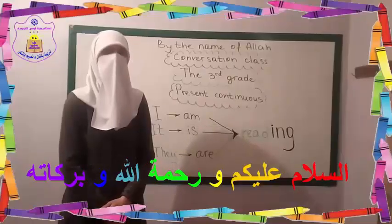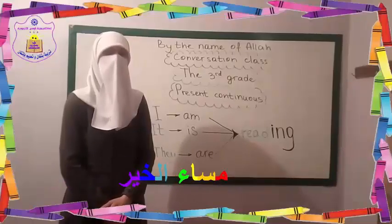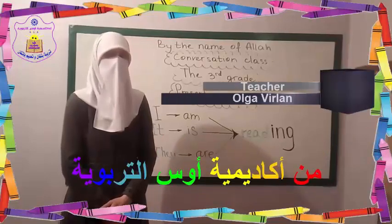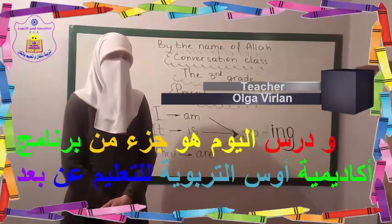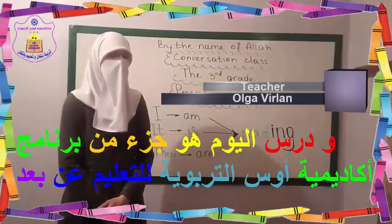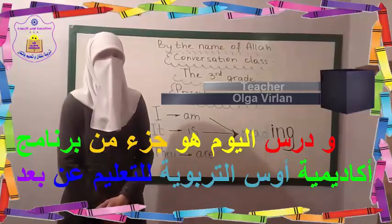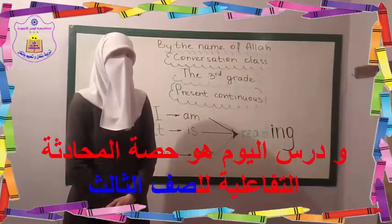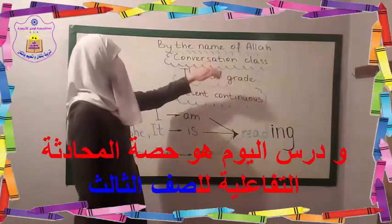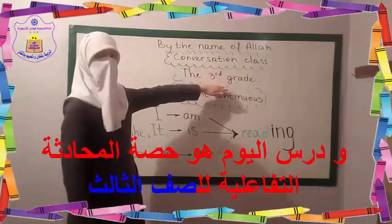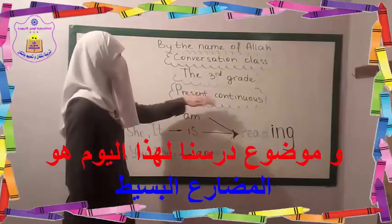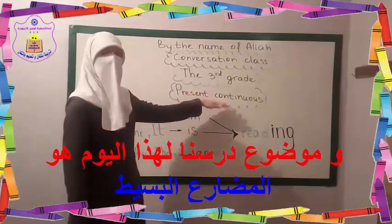As-salamu alaykum wa rahmatullahi wa barakatuh. I am Olyga Vailan, your English teacher from Ausi Academy School. And our today's lesson is part of Ausi Academy program for online education. Today our class is a conversation class for the third grade, and our topic today is present continuous.